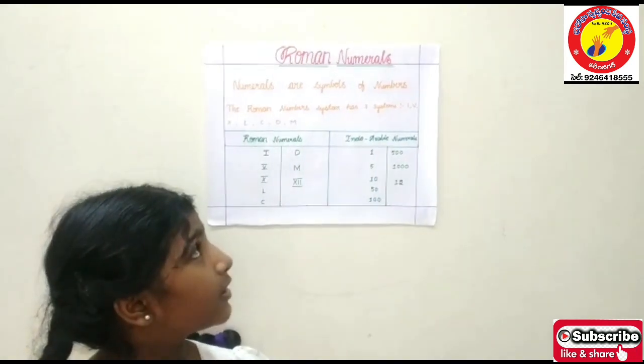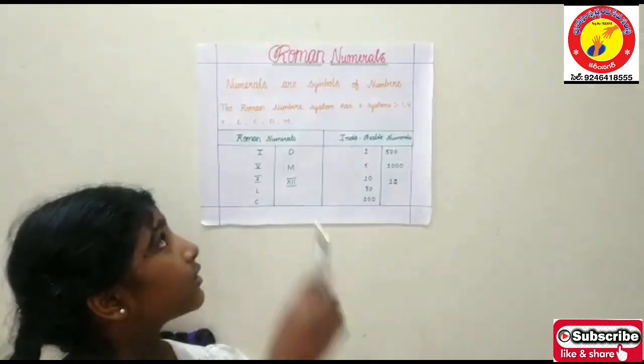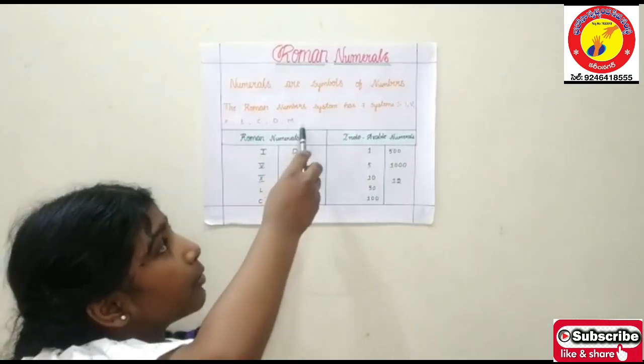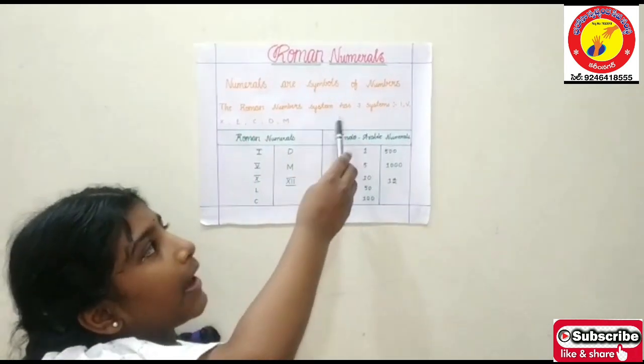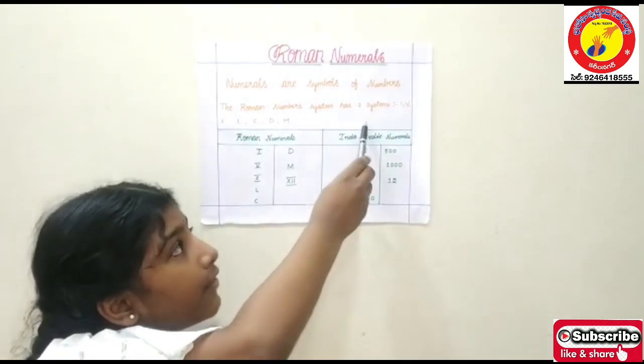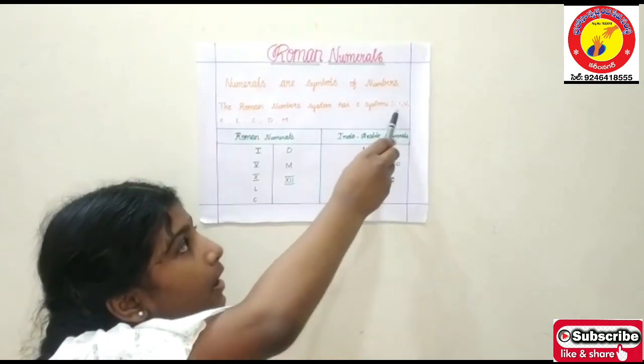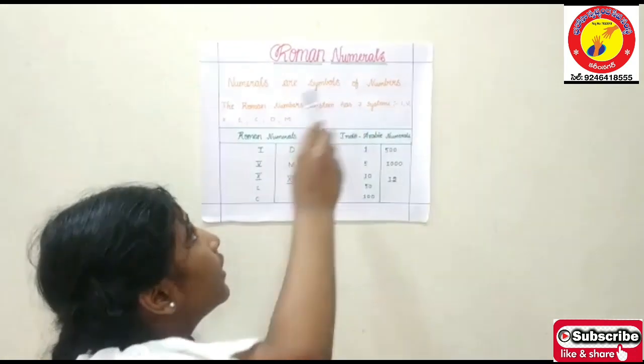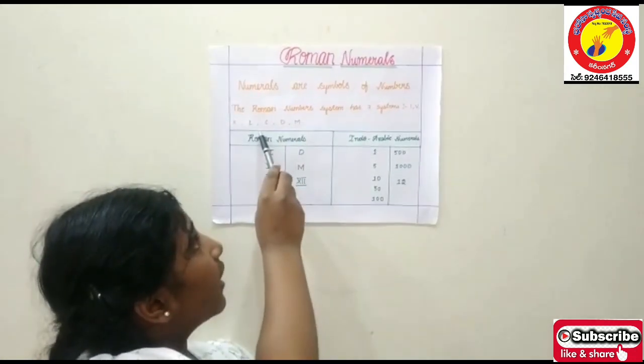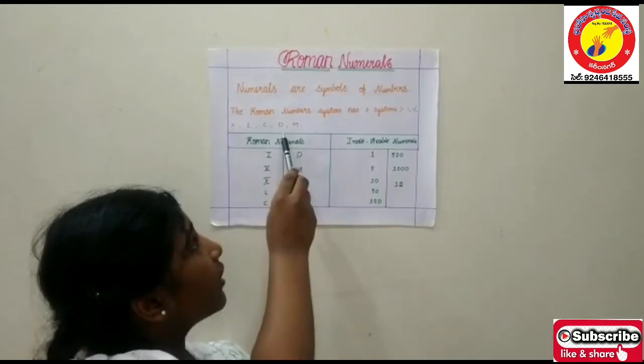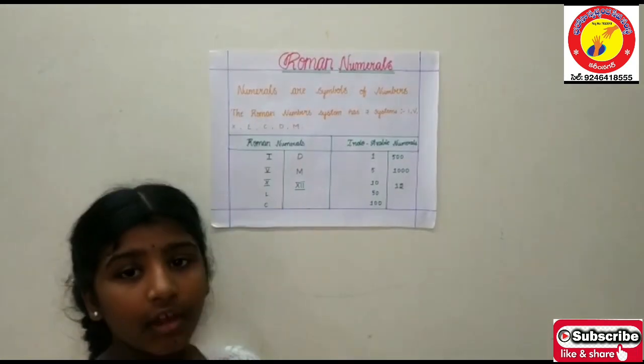Numerals are symbols of numbers. The Roman numeral system has 7 symbols: I, V, X, L, C, D, M.